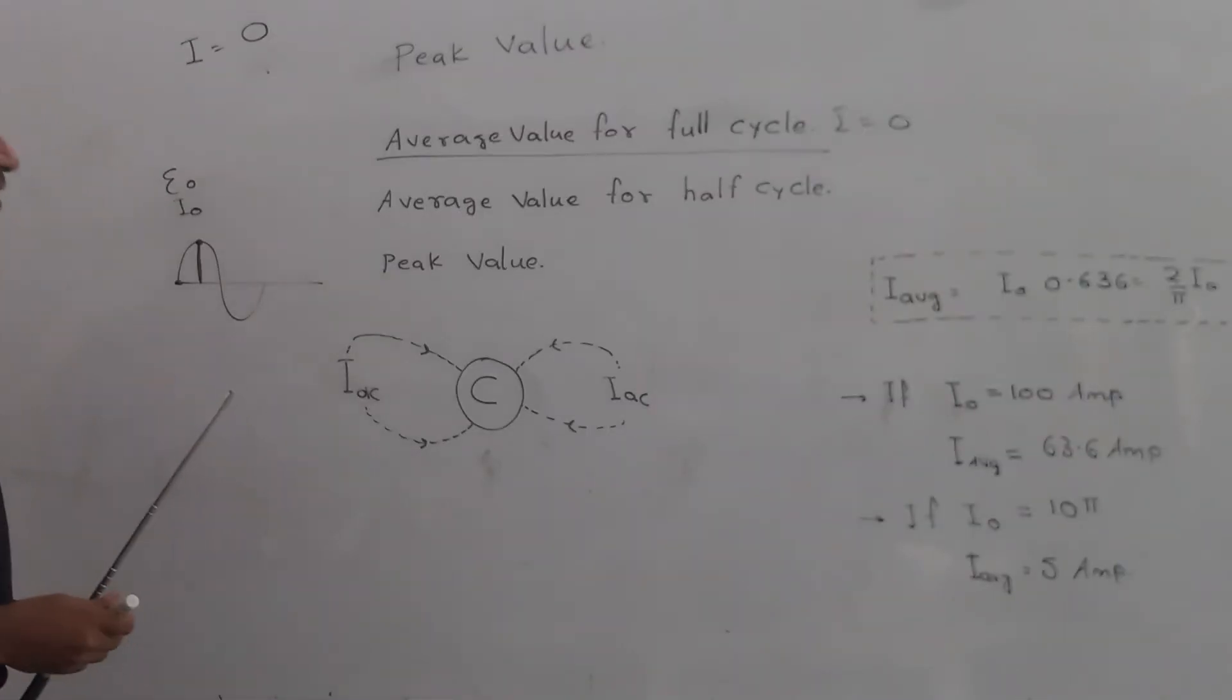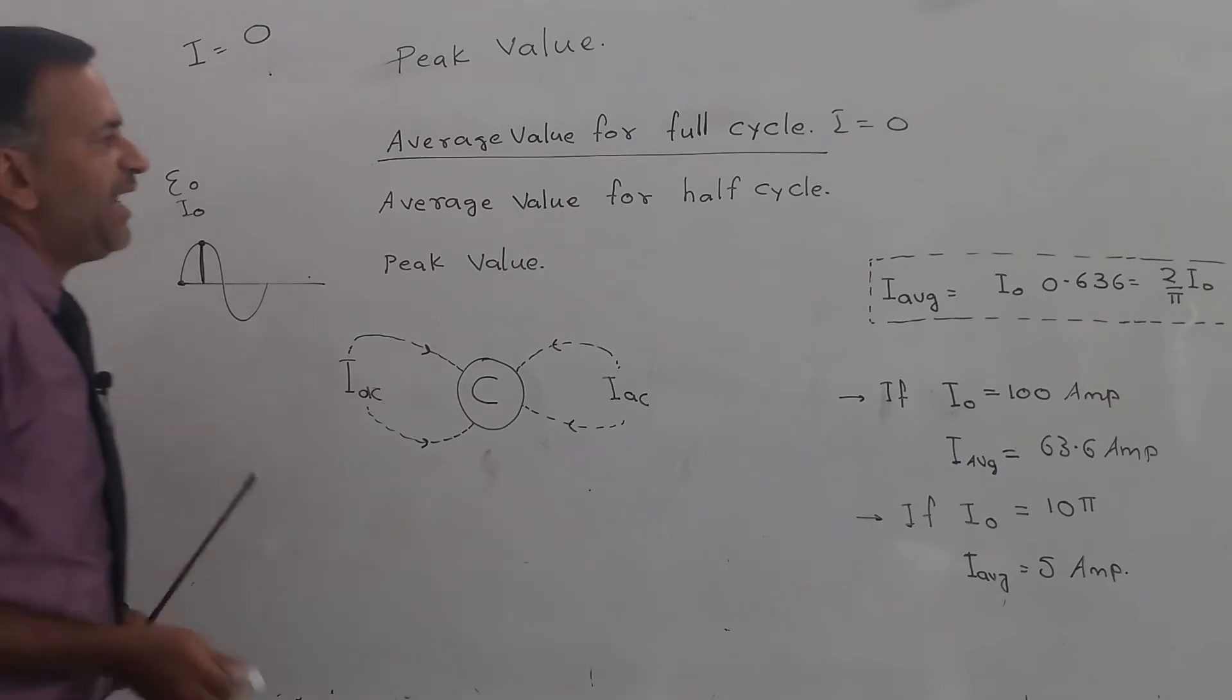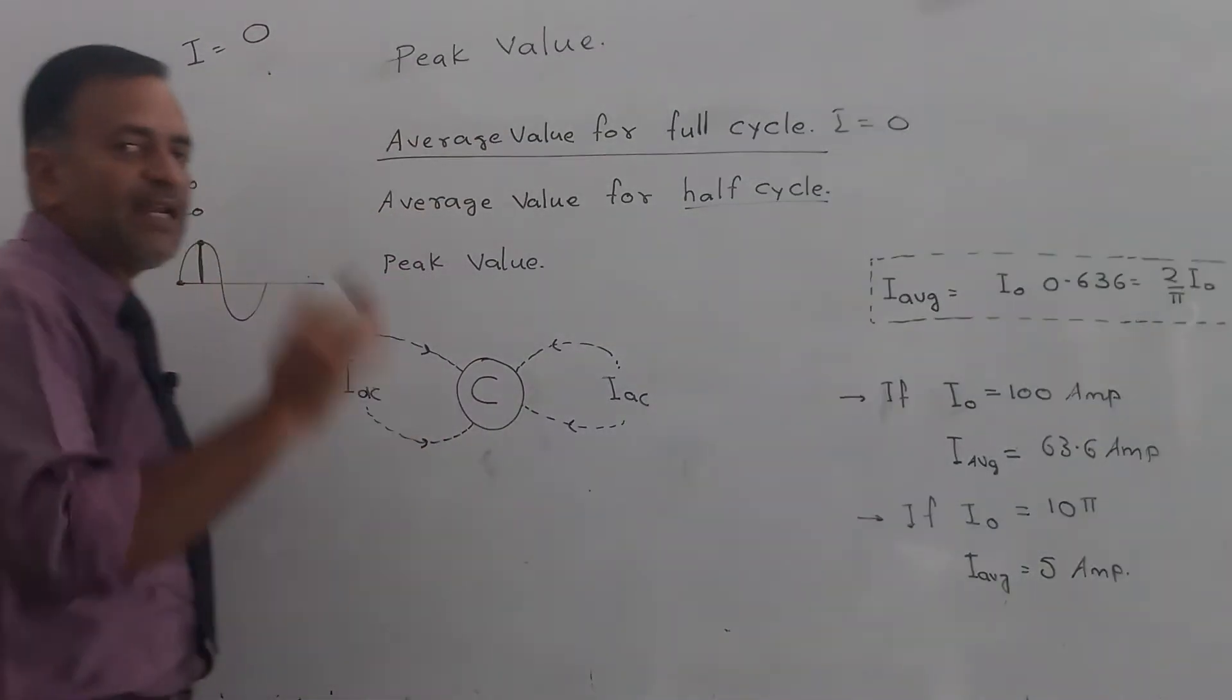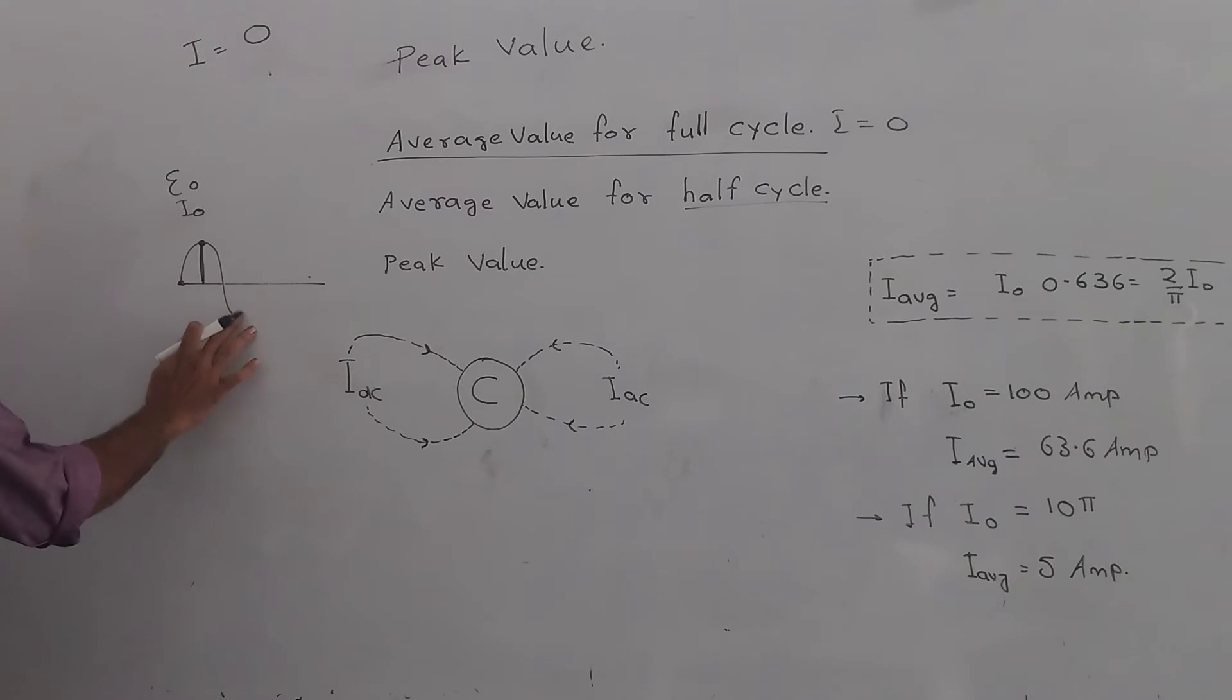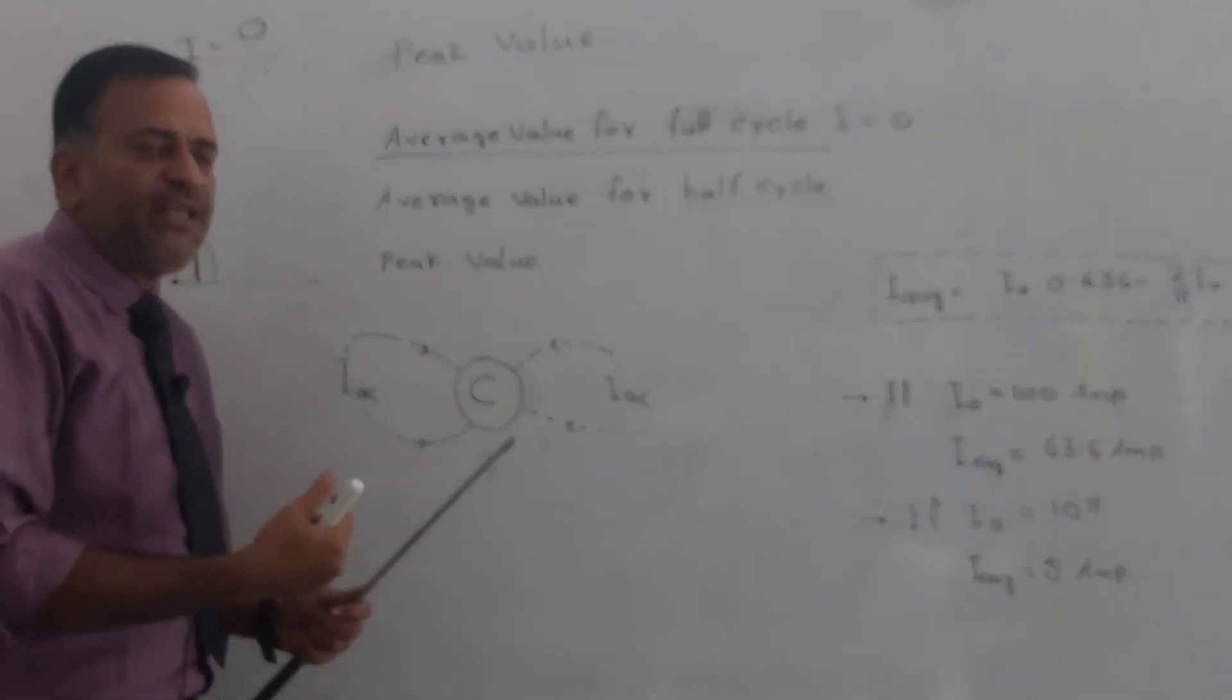So what we do—we do not calculate average value for full cycle. We calculate the average value only for half cycle, that means only for this cycle.